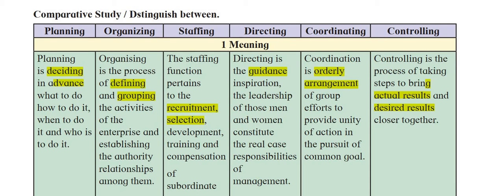Coordination is the orderly arrangement of group efforts to provide unity in action in pursuit of common goals. All are coordinated, everyone knows their work, and together they make an effort to achieve the goals and objectives of the organization. Then comes controlling — the process of bringing actual results and desired results together. Remember: standard performance, actual performance, deviations, and corrective measures.